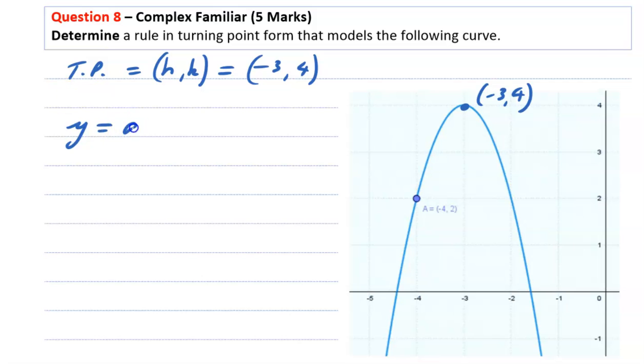The equation we're writing is the turning point form of a quadratic, which is a outside of x take h squared plus k.